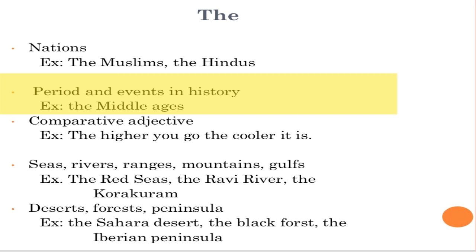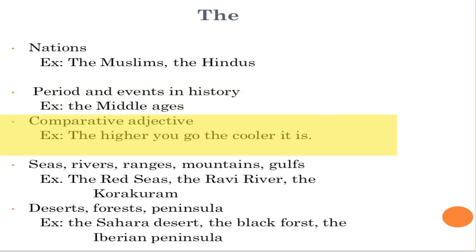Rule number eight: comparatives. When one thing increases and another increases together, or one decreases and another decreases. For example, 'the higher you go, the cooler it is.' Both comparative adjectives take 'the' — 'the higher... the cooler'. The pattern is: 'the' + adjective with '-er', 'the' + adjective with '-er'.